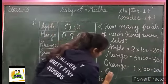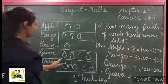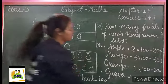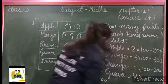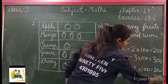Next, guava. Guava: one, two, three, four. Four. Each fruit equals 100, so four multiply 100 equals 400.